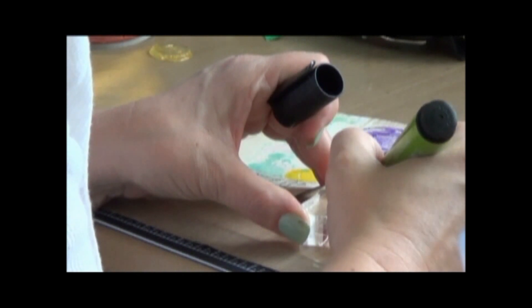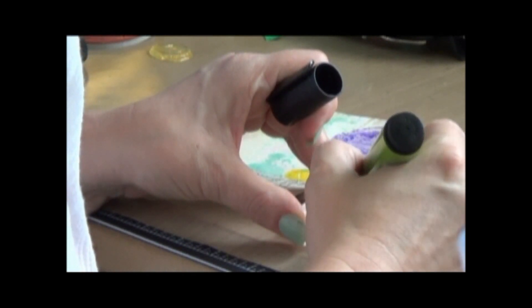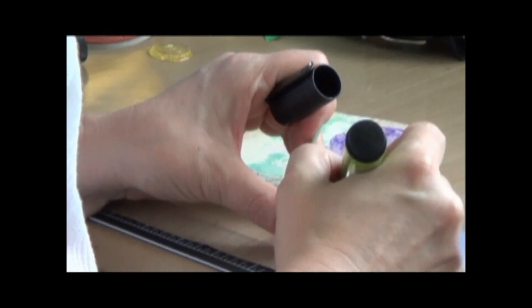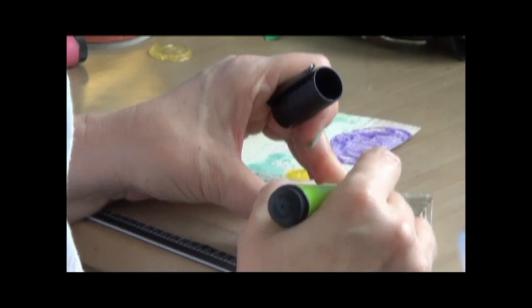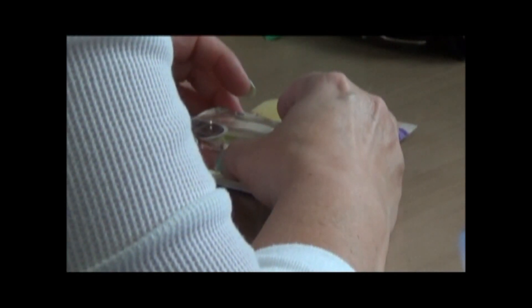but right now what I'm using is the Pitt Artist Big Brush Pen in May Green, and I'm going to be stamping with that on another one of the Hero Arts stamps, and I'm going to just stamp right on top of the tissue tape, like on the very top portion of it, so it says Life is Art.